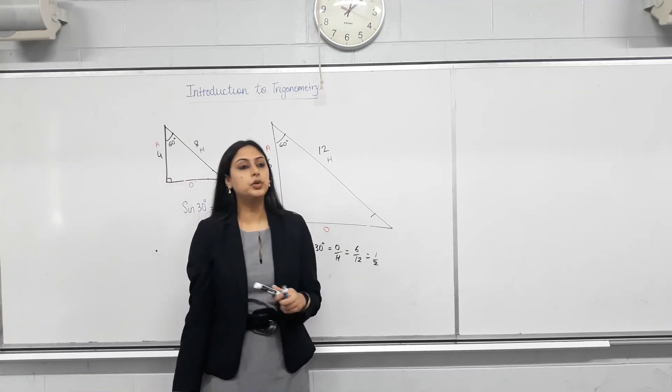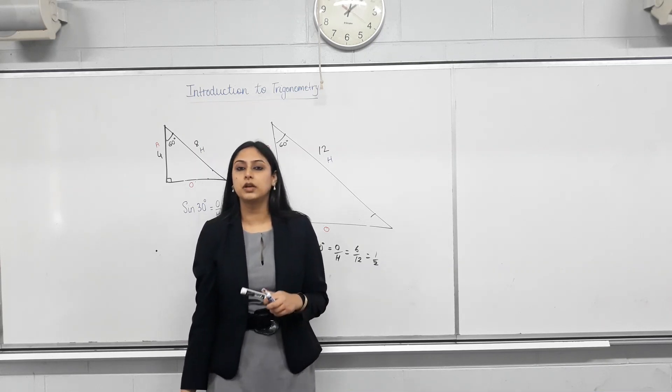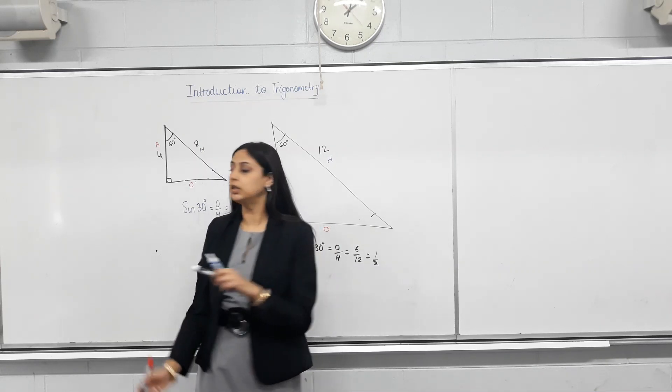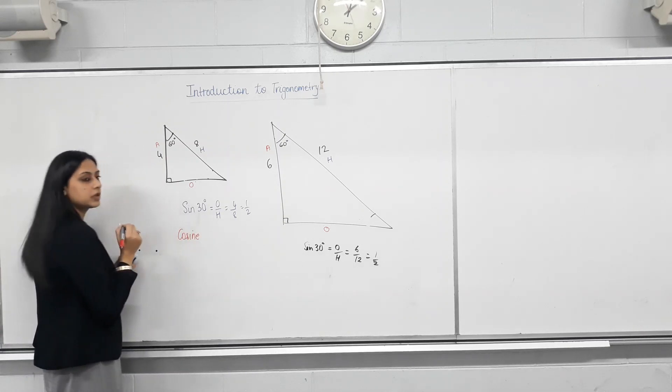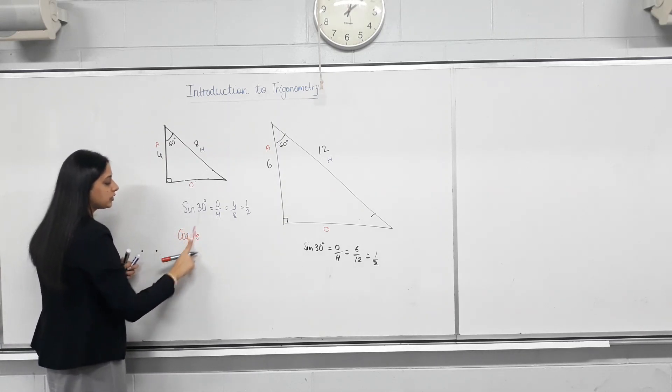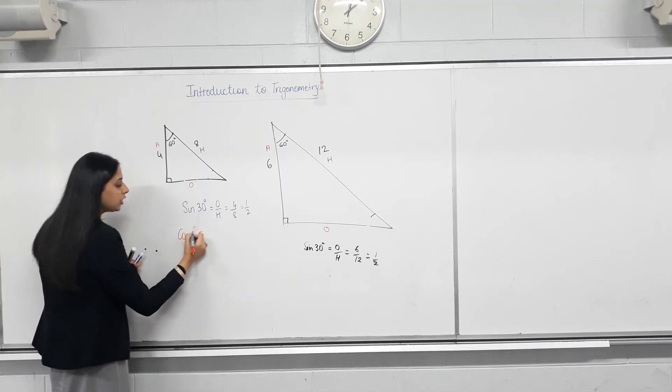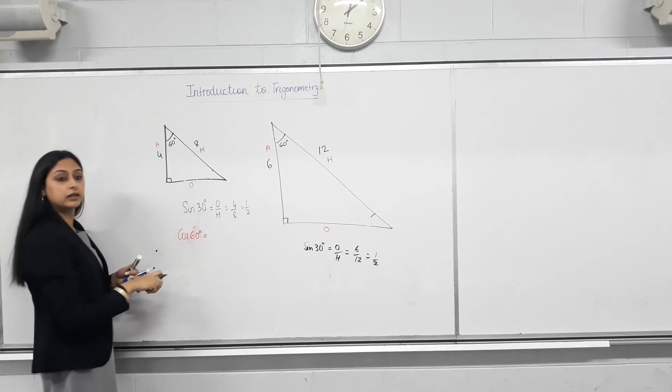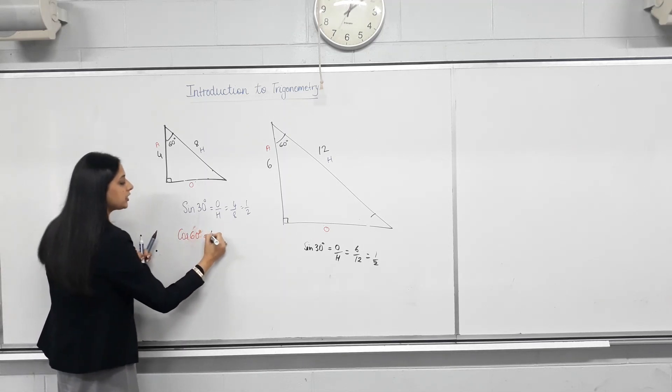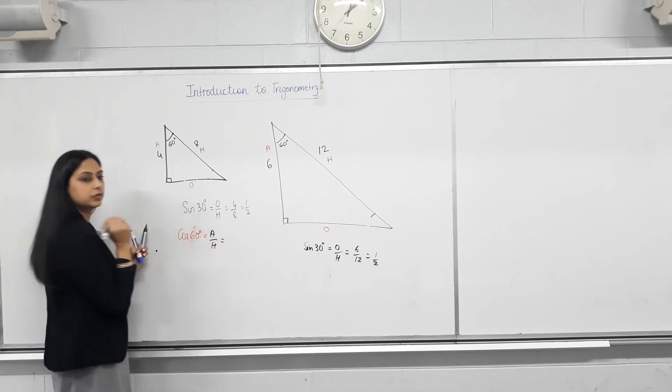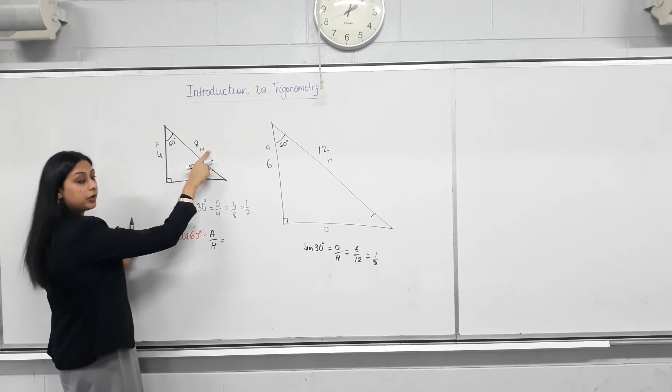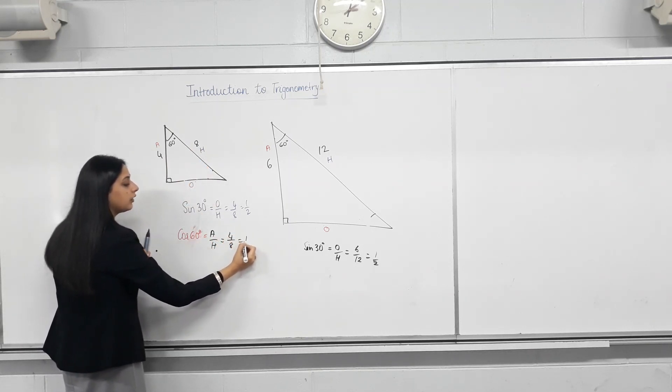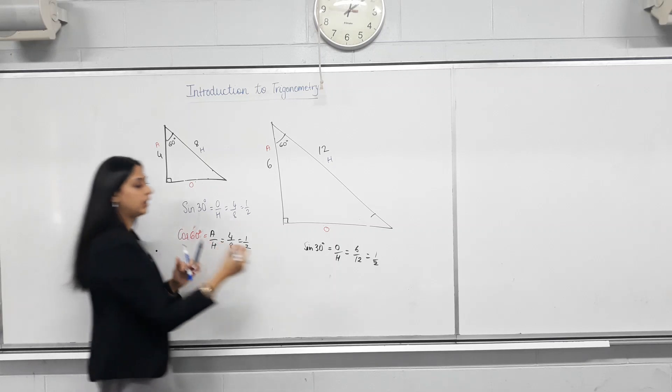Yeah. There's another ratio called the cos ratio, the cosine ratio. So, cosine is the bigger word, the actual ratio. But we use the short form, which is cos. So, cos of 60, cos of any angle is equal to the ratio of adjacent to hypotenuse. What's the adjacent? 4. What's the hypotenuse? 8. So, cos 60 is half as well. And you can check that.